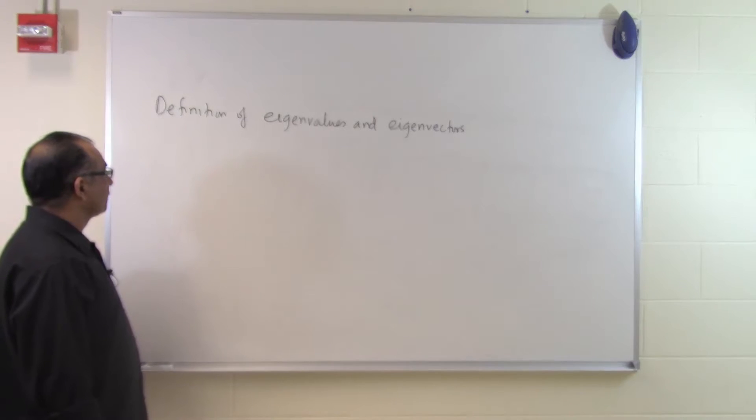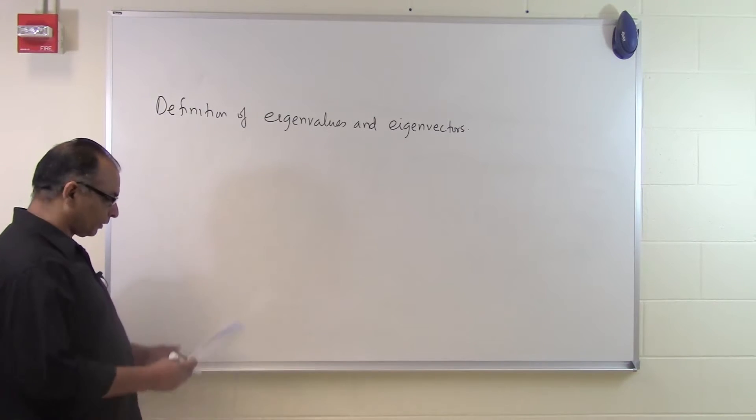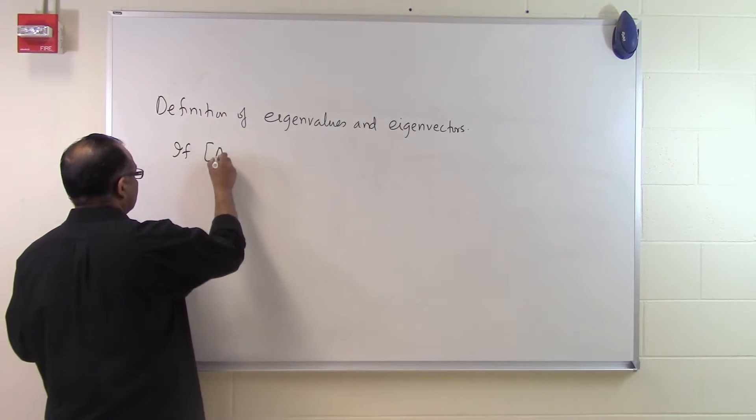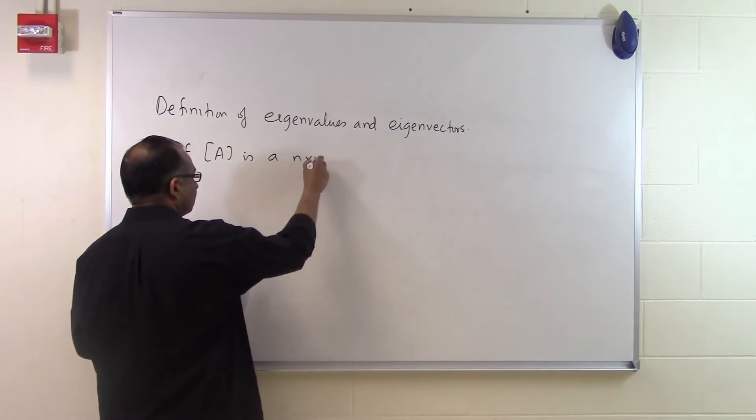In this segment we will talk about what the definition of eigenvalues and eigenvectors is. So if we have A is a square matrix, is an n by n matrix,